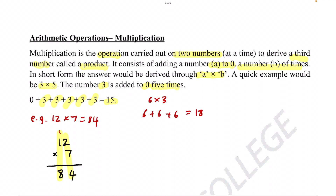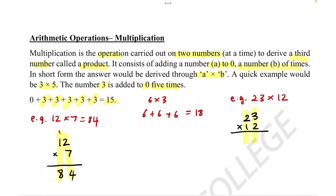In questions that involve more than one two-digit number — for example, 23 times 12 — you can still do this using the same technique. So once again, let's line up the numbers: 23 times 12. Once again, we go 2 times 3, and 2 times 2. So 2 times 3 is 6, and 2 times 2 is 4.